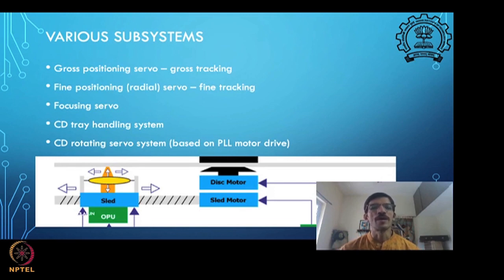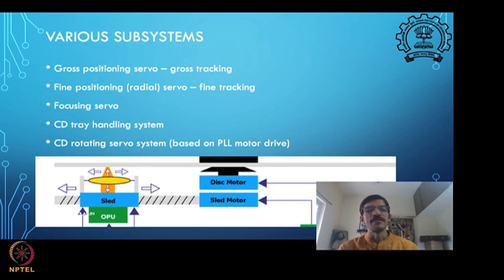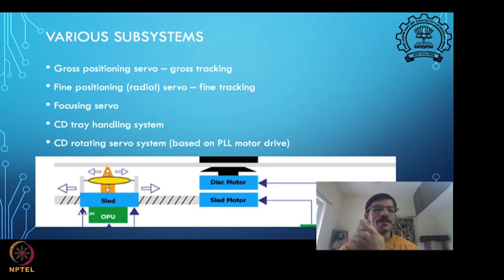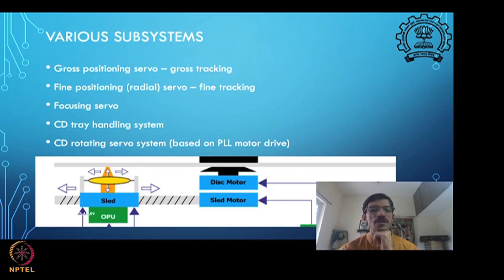No fine micro-stepping can achieve this, simply because of mechanical limitations. Even if you have very fine positioning sensors, you would not be able to position the laser spot on the surface of a CD within an accuracy of 100 nanometers using a stepper motor. That is certainly not possible.